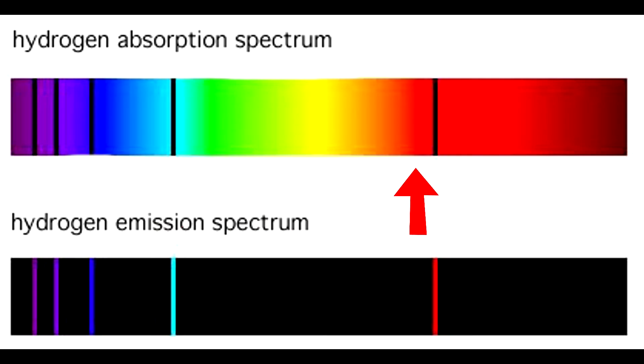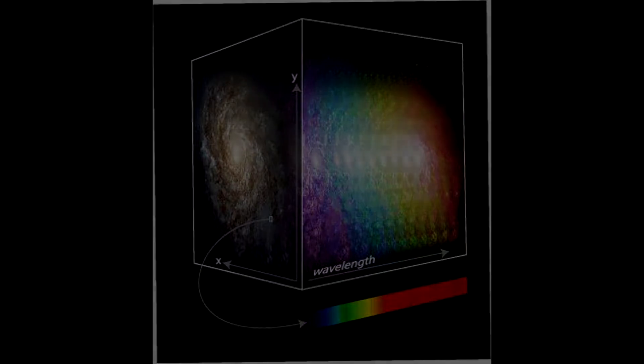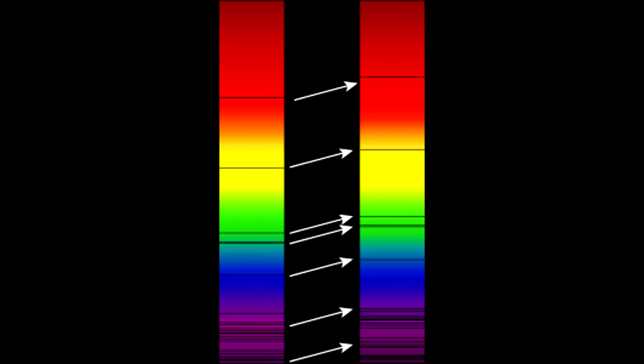A spectrograph breaks up the nebula light into its separate colors. This tells us what the nebulae are made of, but once the spectrum absorption lines were analyzed, something interesting was noticed. The familiar lines were there, but they were shifted down towards the red end of the spectrum.